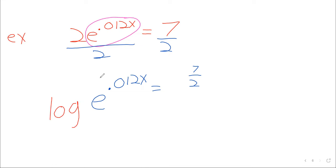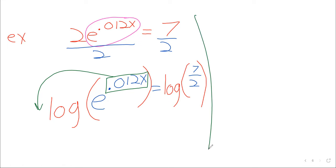Again, this would, in one sense, work out nicer if I used the natural logarithm. But I'm just using the common log for everything, try to keep things simple. Now this power comes down, and we get 0.012x times the log of e equals the log of 7 halves.